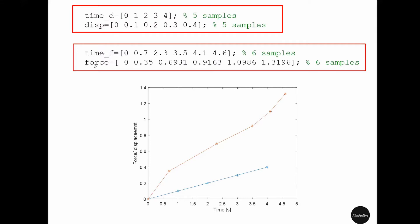Whereas the force was recorded at six time points and these time points are different than the time for displacement. So not only the sampling frequencies are different between these data, they are also recorded at different time intervals.